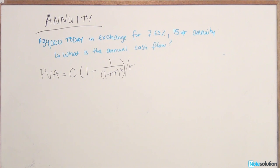Looking at the question, you have most of the inputs into this equation, so you can calculate the annual cash flow. You have your present value of the annuity, which is $34,000.